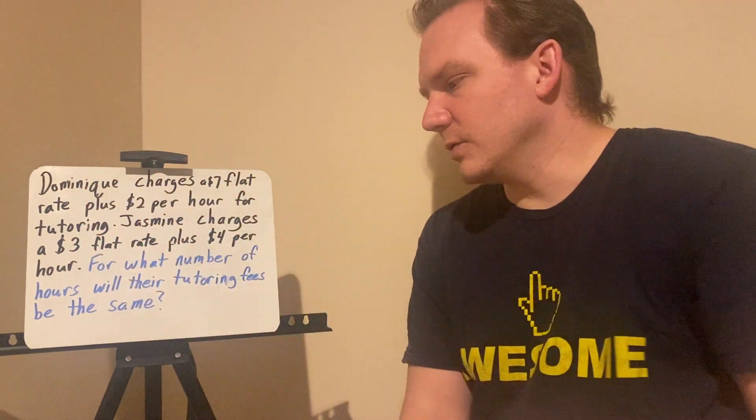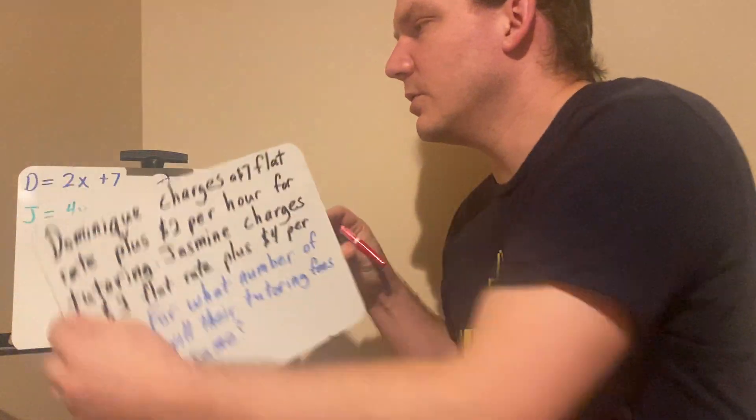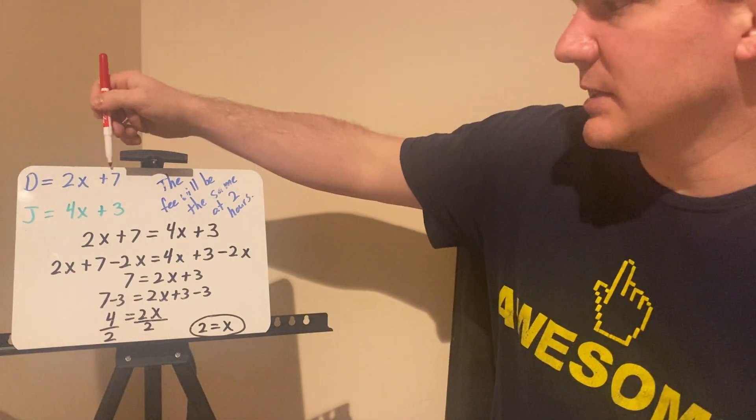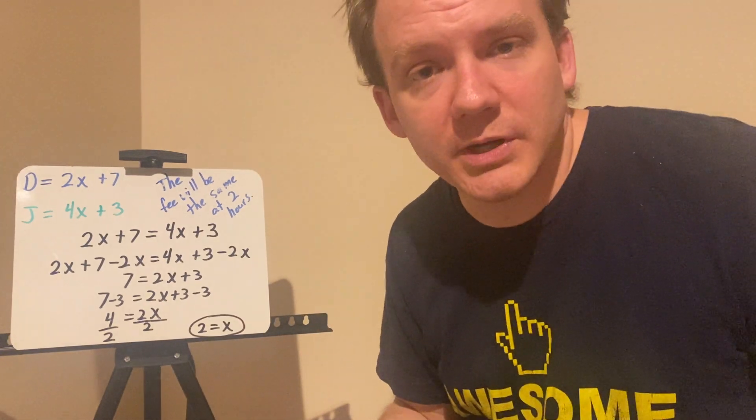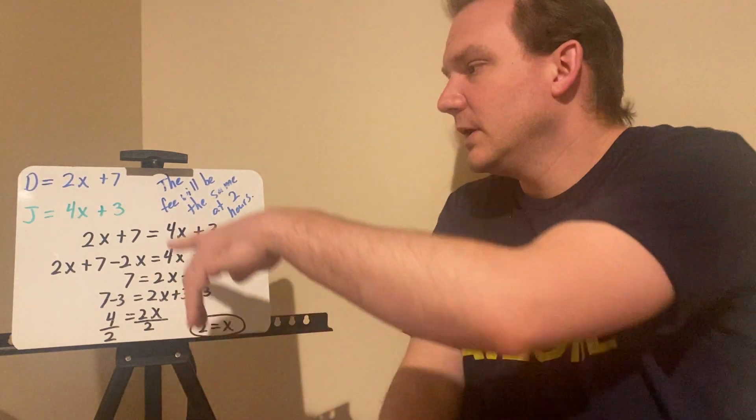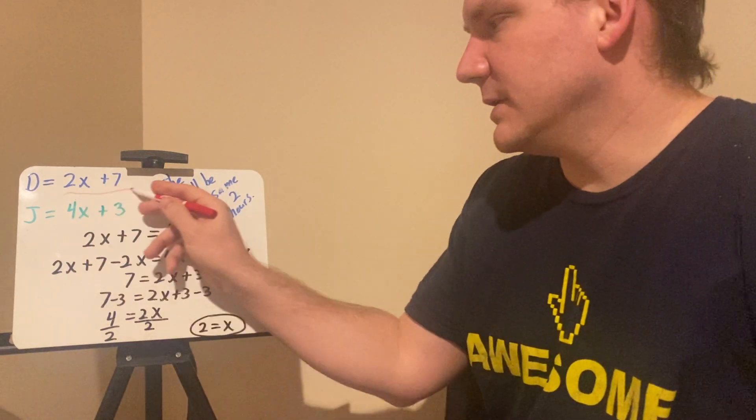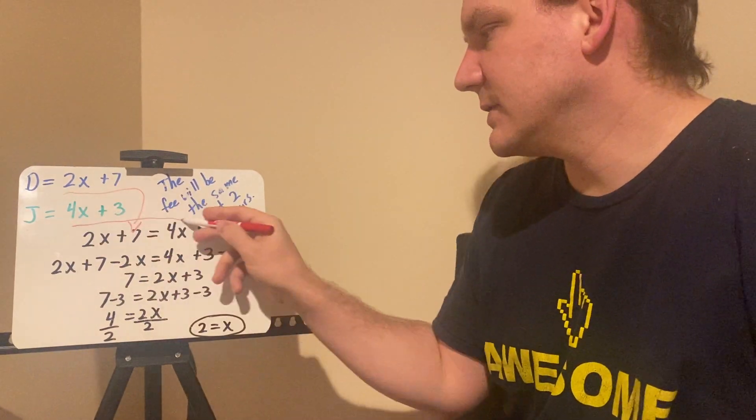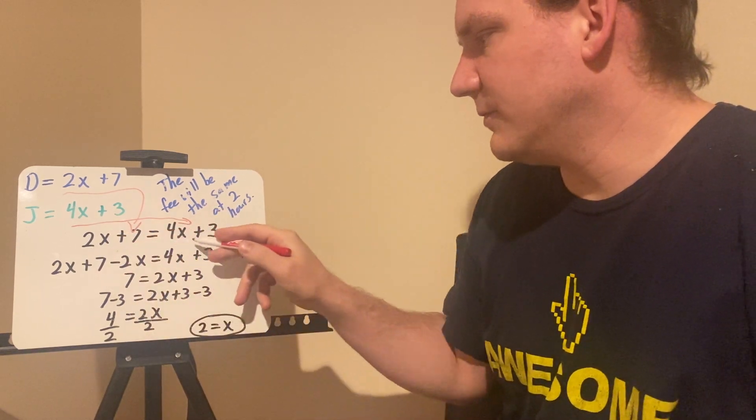And then $2 per hour, so 2 times x plus the $7 flat rate would be Dominique. For what number of hours will their tutoring fees be the same? To set this up, I write those two equations. Dominique is 2x plus 7, and Jasmine is 4x plus 3, where x in both situations represents the number of hours. I then set those equations equal to each other. Now we have 2x plus 7 equals 4x plus 3.